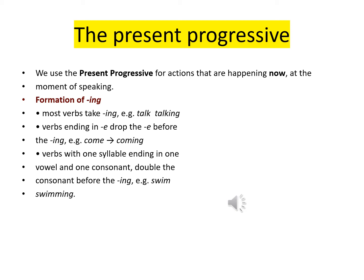Verbs with one syllable ending in one vowel and one consonant double the consonant before adding ING. For example, swim → swimming. As you notice, swim ends in a vowel I and a consonant M, so we double the consonant M before adding ING.